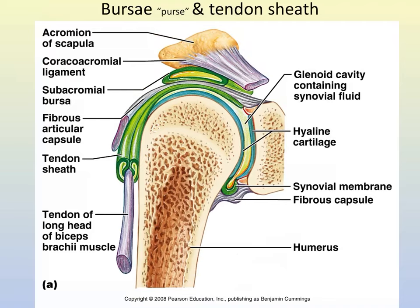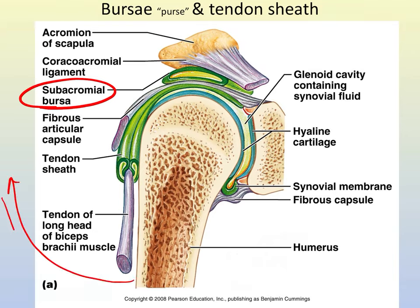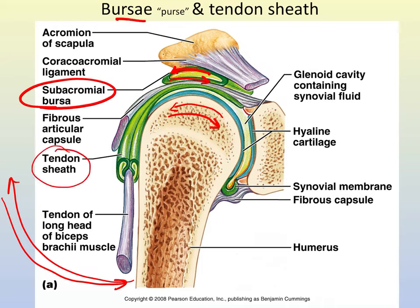We also have bursa and tendon sheaths. A bursa is like a ball bearing — for example, the subacromial bursa underneath the acromion. It is fluid-filled and moves with the head of the humerus as you raise and lower your arm, rolling with it to reduce friction in that movement. Tendon sheaths do the same thing — a tendon sheath is an elongated bursa that wraps around a tendon. When you contract and relax your biceps brachii, the tendon moves through a small space, so the sheath minimizes stress and friction.